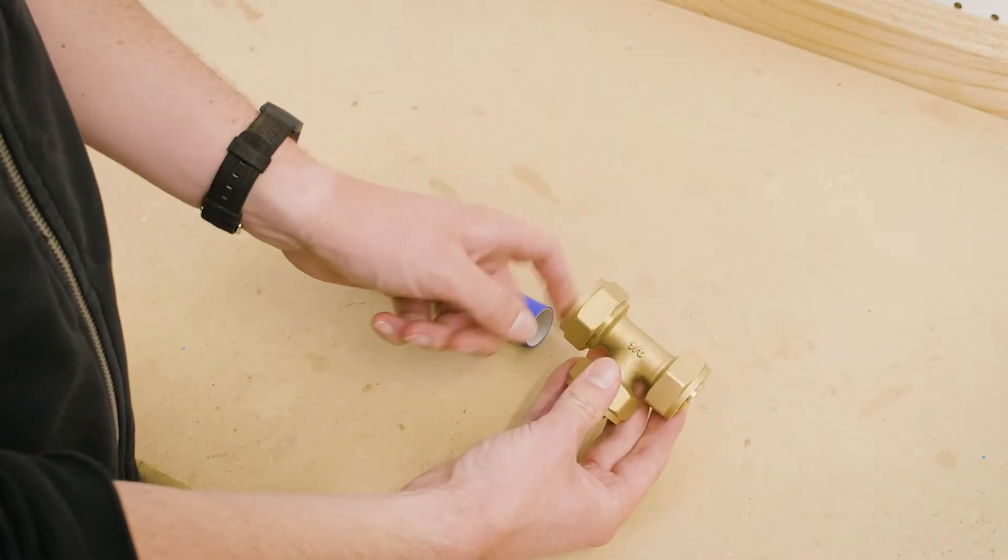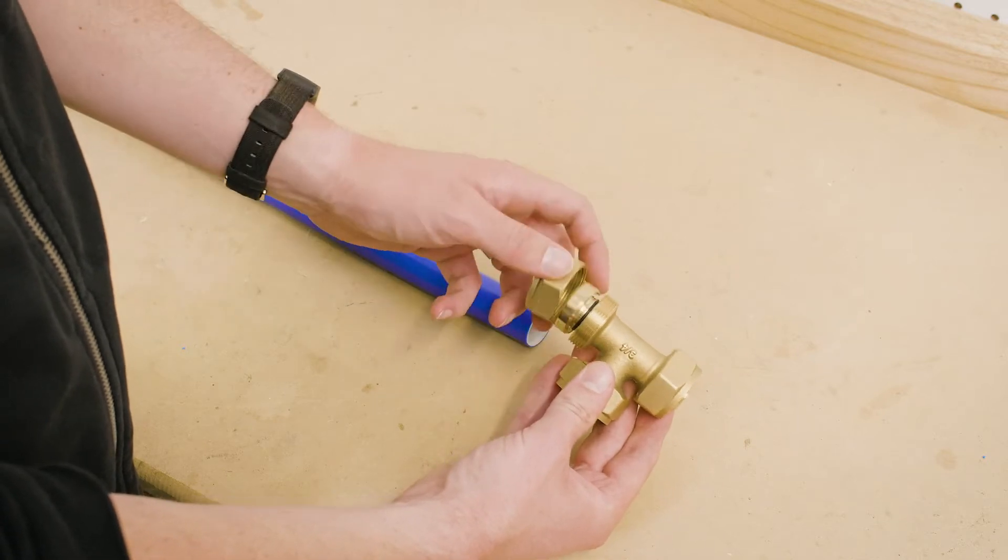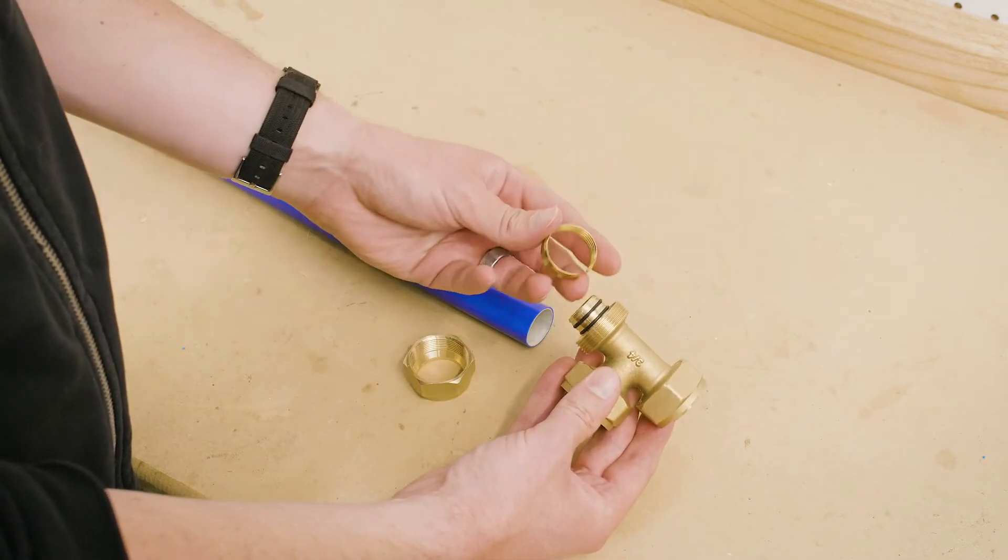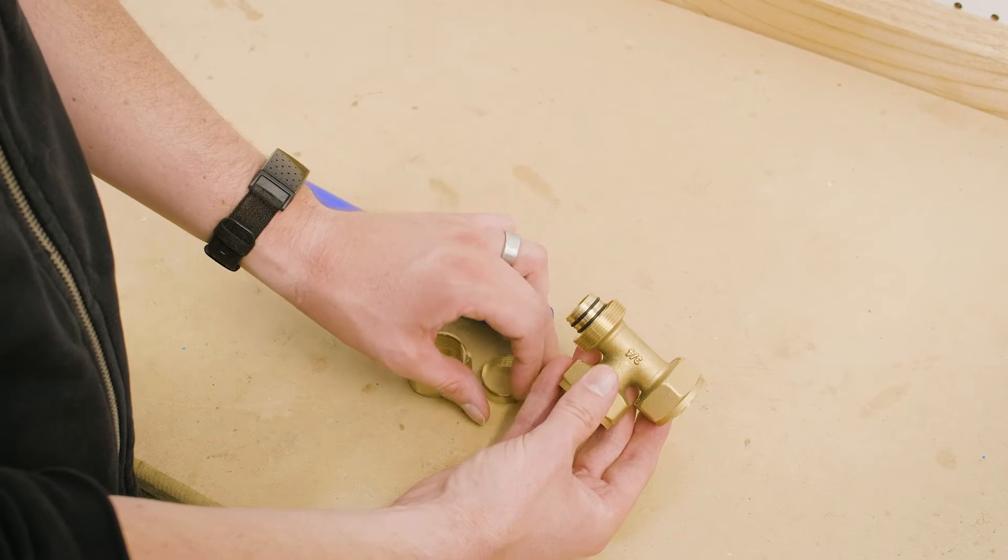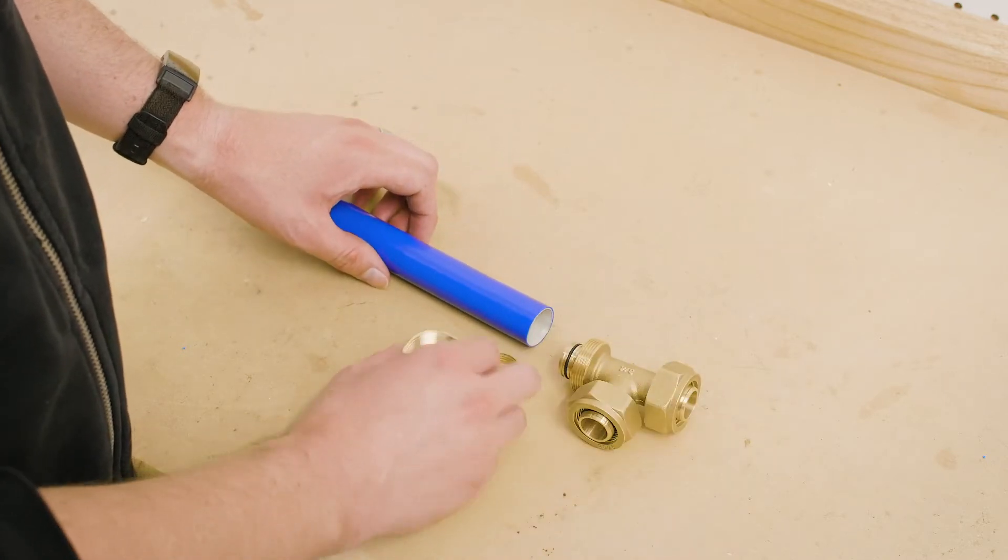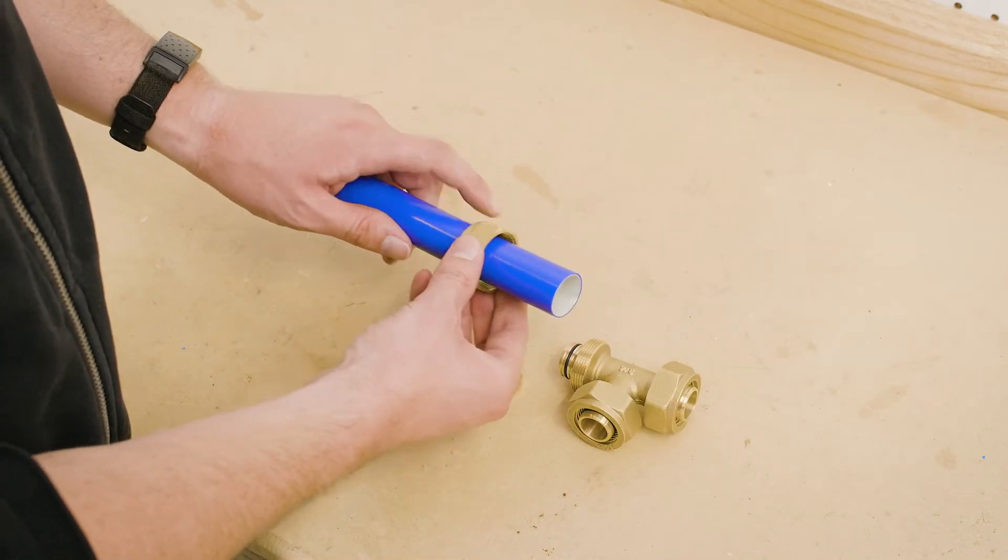After deburring, remove the nut and split ring from the fitting and place them onto the tube. Place the nut on first, then the split ring.